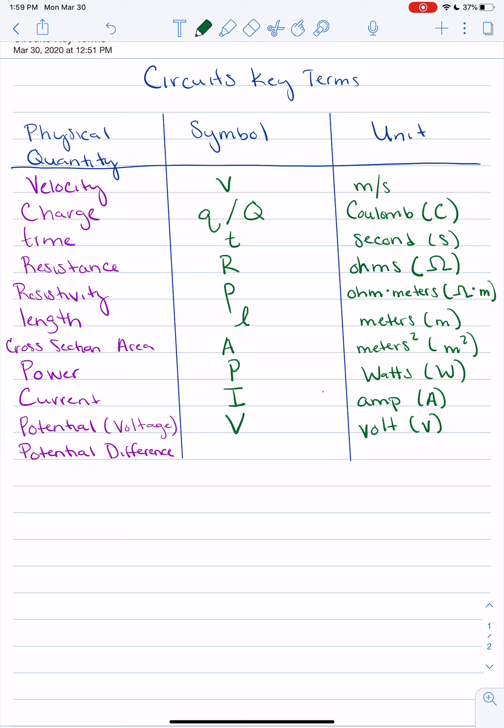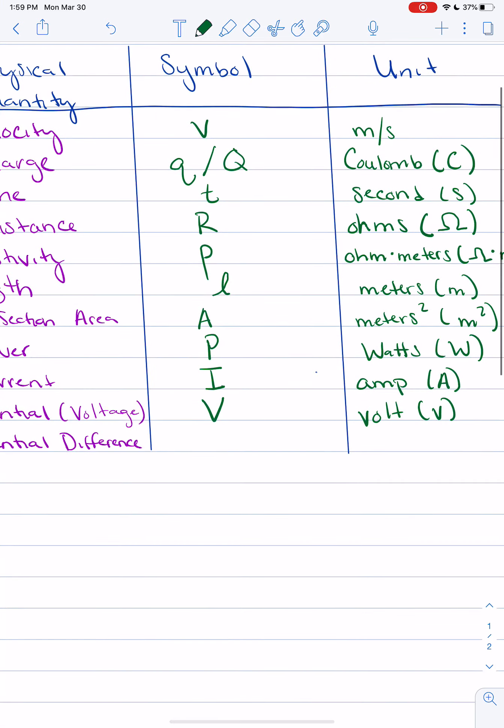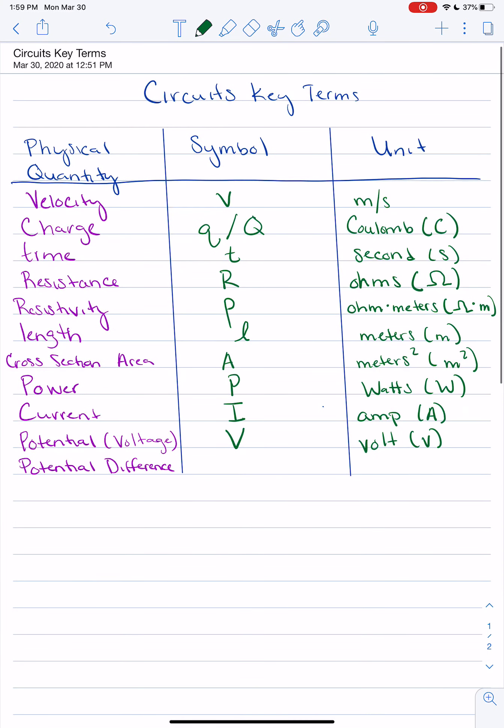Now potential difference is very similar to potential. It's just if you had a circuit, if you look at two different places in that circuit, and you subtract their potentials, you get your potential difference. And we should remember that delta means change. So change in potential or potential difference. So we have delta V. And if you subtract two volts, you're still going to get volts. So the unit for potential difference is volts.